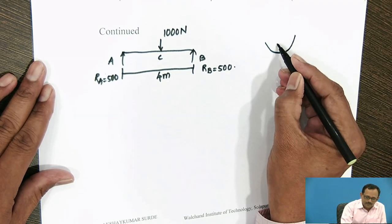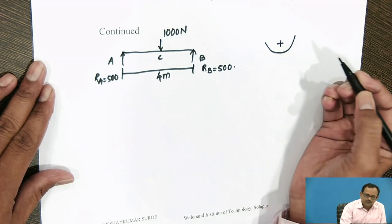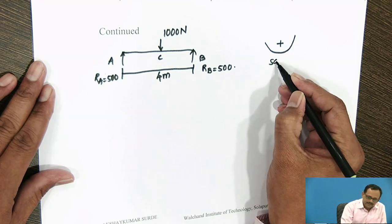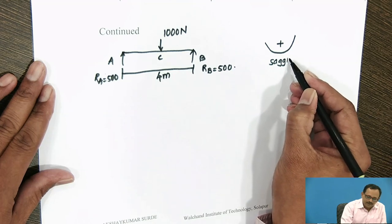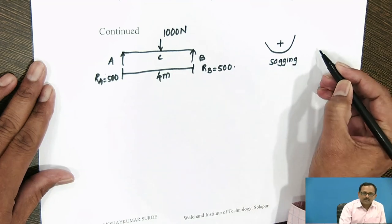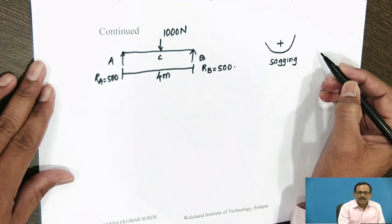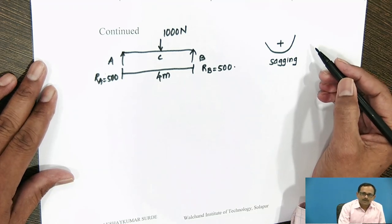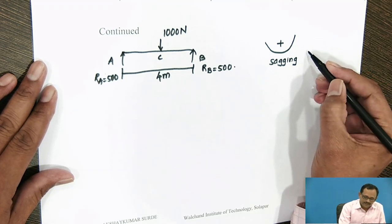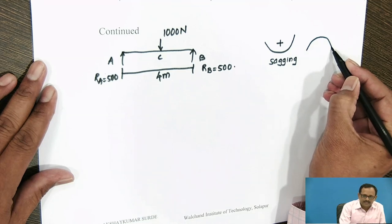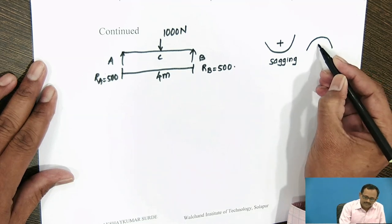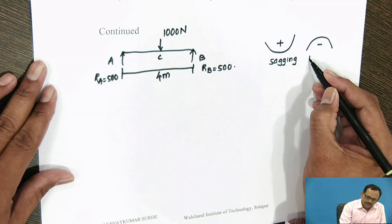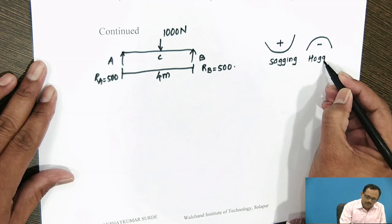Such moments are considered to be positive and are known as sagging moments. Whereas, the bending moment at the section which tends to bend the beam to a curvature having convexity at the top — such moments are considered to be negative and are called hogging moments.